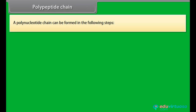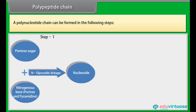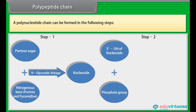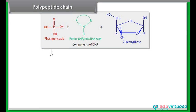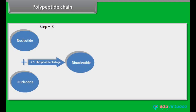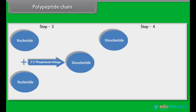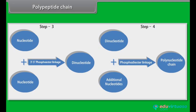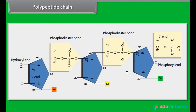A polynucleotide chain can be formed in the following steps. A polynucleotide chain has a phosphate moiety at one free end of ribose sugar — this is known as the 5' end of the polynucleotide chain. The other free end of ribose sugar has an attached OH group — this is called the 3' end of the polynucleotide chain.